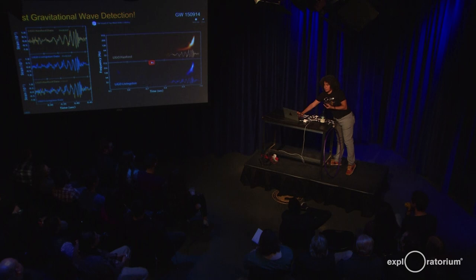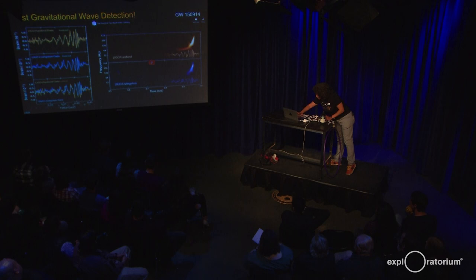Even cooler: scientists realized this is a frequency. We can't hear it directly because it's really low, but we can shift it up into frequencies that we can hear. So let's hear the gravitational wave sound. First you hear the actual signal, then shifted up into an audible register. That chirp — it went from a low frequency up to a high frequency really, really fast. That's what a gravitational wave sounds like. That's what the jiggle of the Earth sounds like.